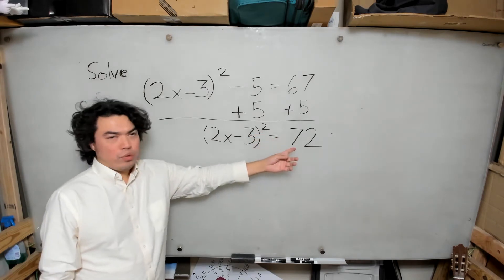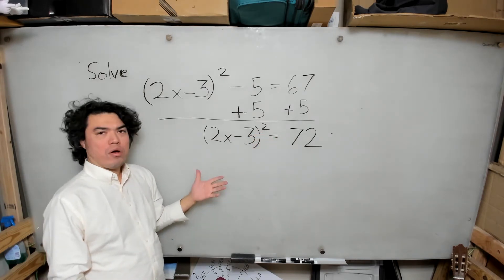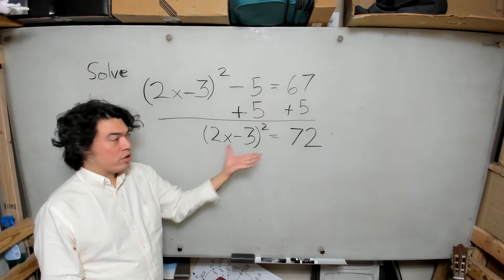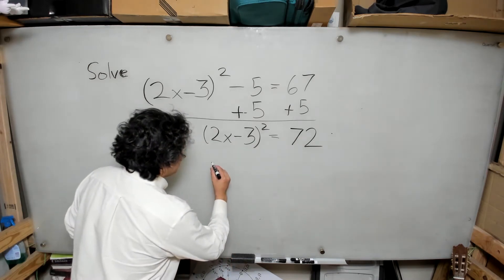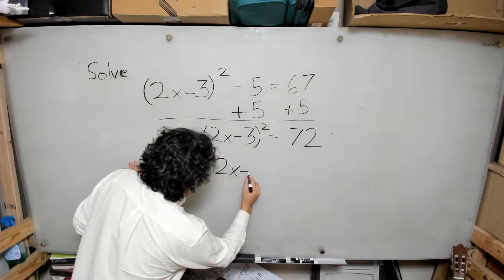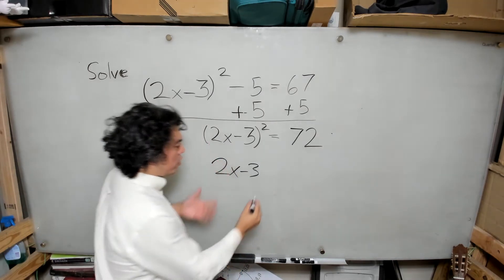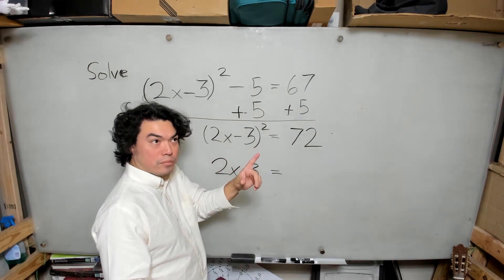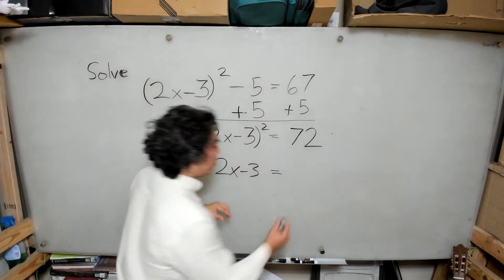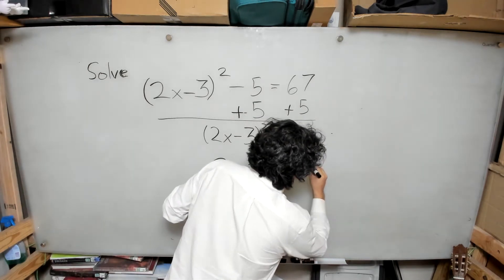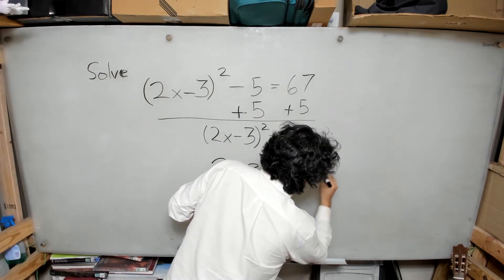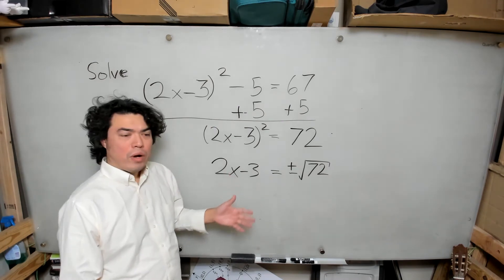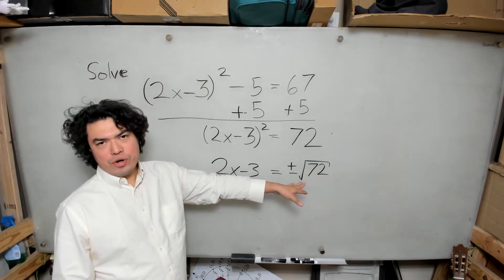Now we have this square term by itself, equal to the number 72. We recall that once we have the square term isolated, we just take the square root of both sides to get the inside by itself. So I get 2x minus 3 equals plus or minus the square root of 72.